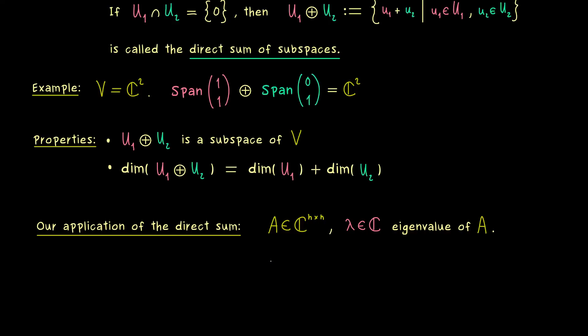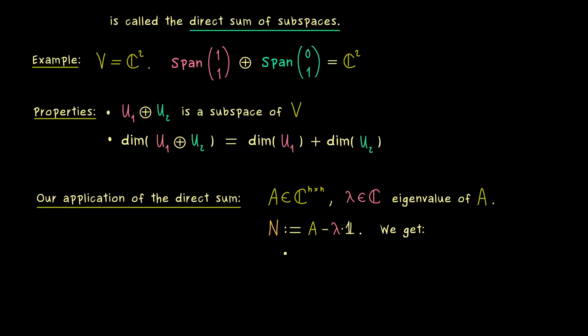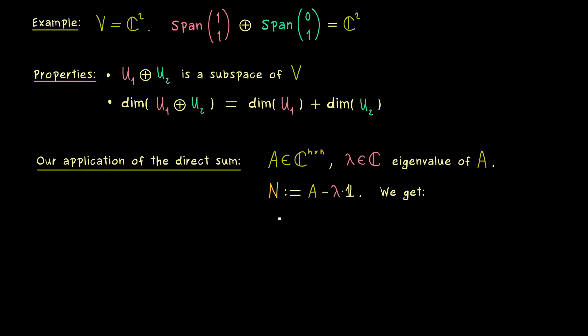And now, if we have an eigenvalue of A, which we call lambda, we can define a new matrix N. And there please recall, this one is simply given as A minus lambda identity matrix. Moreover, in the last videos, we have already learned that we have a whole chain of generalized eigenspaces.